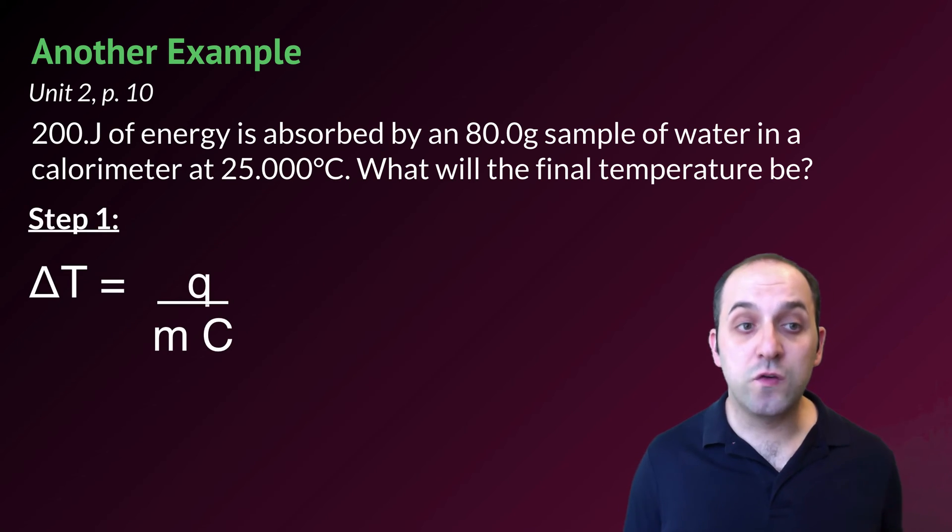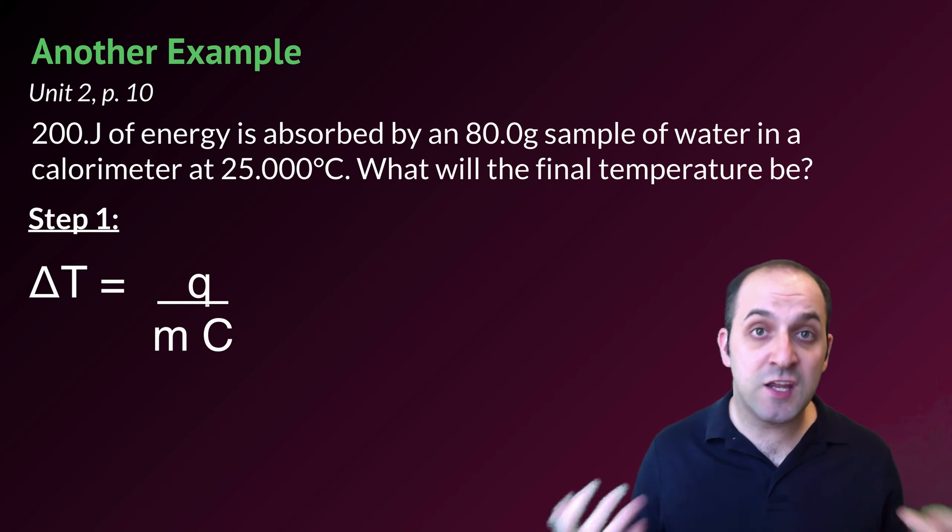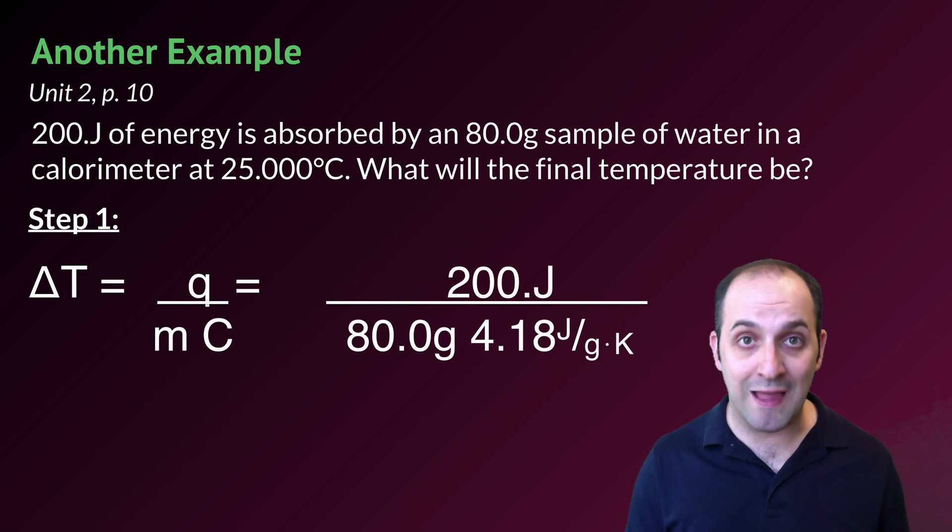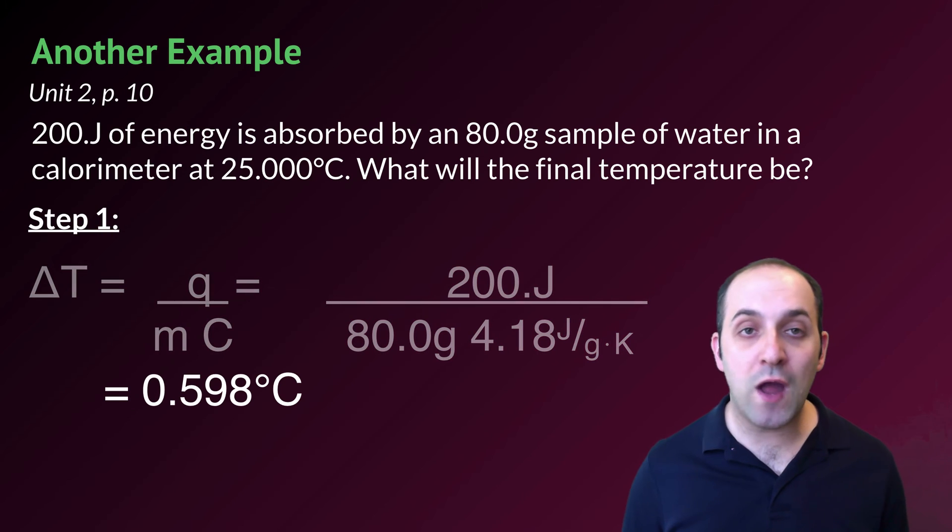So this is actually going to be a two-step problem. In our first step, we're going to solve for delta T. To do that, we're going to rearrange the calorimetry equation and divide Q, or the heat content, by the mass times the specific heat. Of course, we are dealing with water, so it's going to look like this. When we do that, we wind up with a change in temperature equal to 0.598 degrees Celsius.